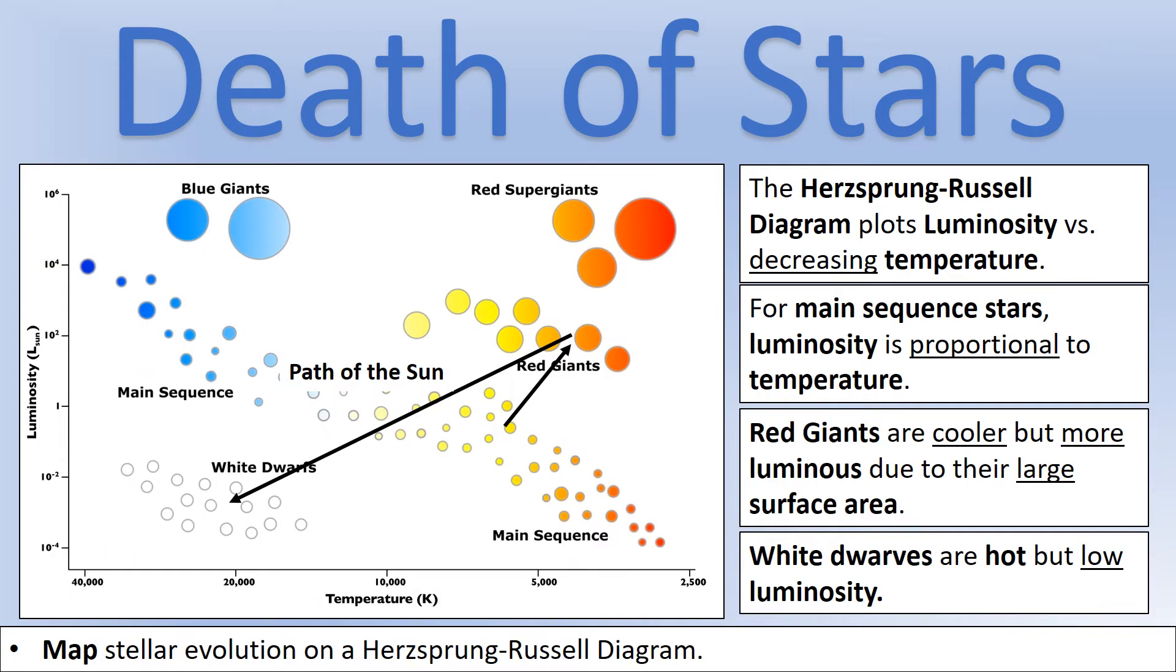So we're going to use a Hertzsprung-Russell diagram to actually look at the different phases we've talked about so far. So down the middle, we can see this band that's called the main sequence band there. So on the x-axis, we can see we've got temperature, but as we go along, temperature decreases. And on the y-axis, we've got luminosity measured as multiples of the sun's luminosity.